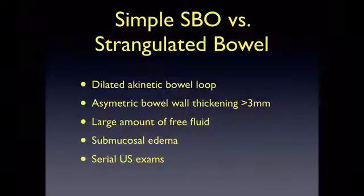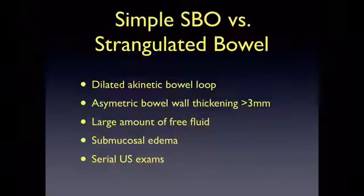According to a study by Ogata et al., abdominal ultrasound is also useful in evaluating for bowel strangulation. Ultrasound findings suggestive of strangulated bowel include dilated akinetic bowel loop, asymmetric bowel wall thickening greater than 3 mm, large amount of free fluid between the loops of bowel, and submucosal edema. These findings warrant serial ultrasound exams to look for increasing free fluid or submucosal edema, in addition to an emergent surgical consult. Differentiating between simple SBO versus strangulated SBO by ultrasound can be extremely challenging and time-consuming, so it may be beyond the scope of the emergency physician's practice.